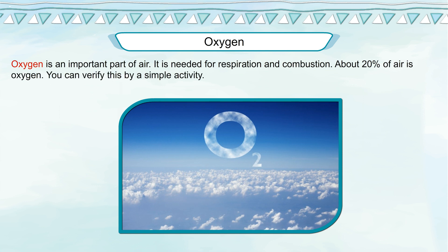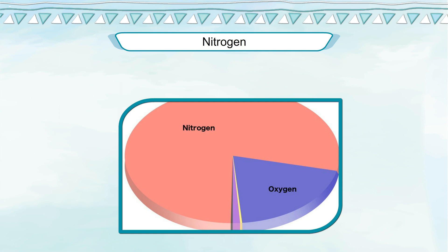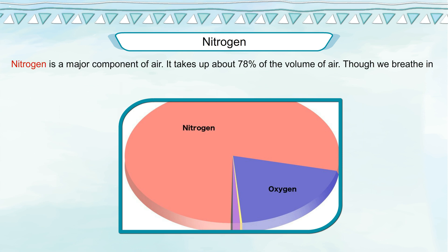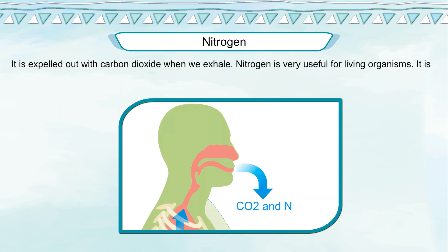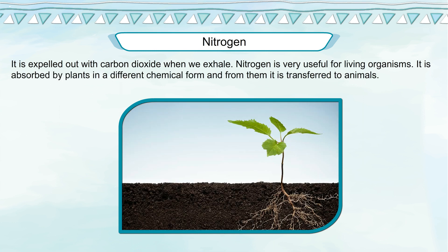You can verify the amount of oxygen by a simple activity. Nitrogen is a major component of air — it takes up about 78% of the volume of air. Though we breathe in nitrogen along with oxygen, it is not absorbed by our body. It is expelled out with carbon dioxide when we exhale. Nitrogen is very useful for living organisms; it is absorbed by plants in a different chemical form and from them it is transferred to animals.